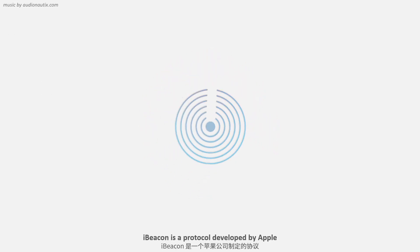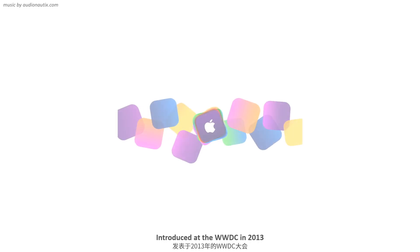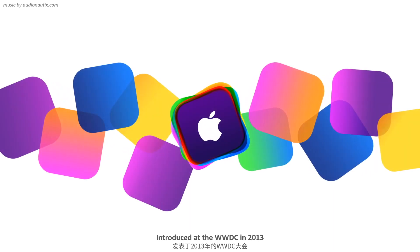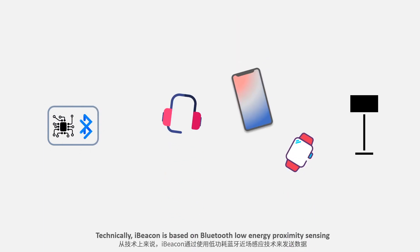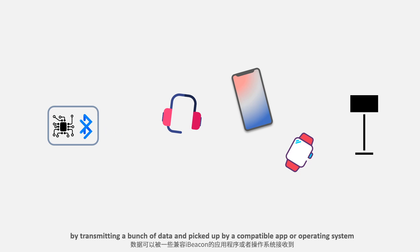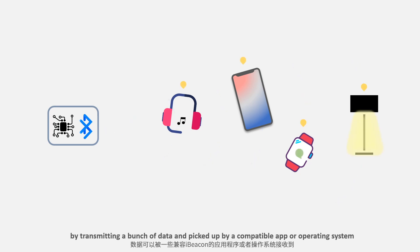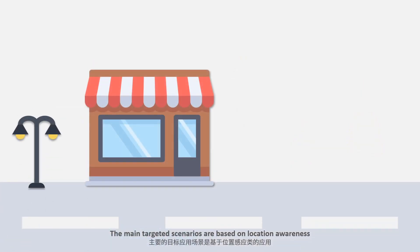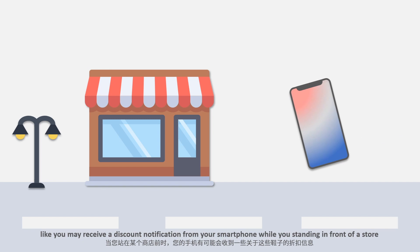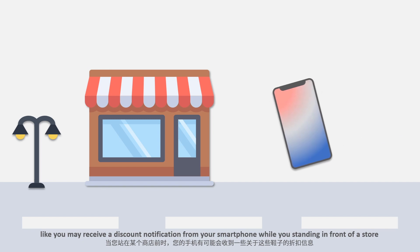iBeacon is a protocol developed by Apple and introduced at WWDC in 2013. Technically, iBeacon is based on Bluetooth Low Energy proximity sensing by transmitting data and picking it up at a compatible app or operating system. The main target scenarios are based on location awareness — for example, you may receive a discount notification on your smartphone while standing in front of a store.